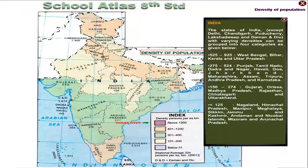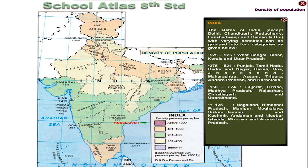The states of India, except Delhi, Chandigarh, Puducherry, Lakshadweep, and Daman and Diu, with varying density, can be grouped into four categories. The first category, with density 525 to 925, includes West Bengal, Bihar, Kerala, and Uttar Pradesh.